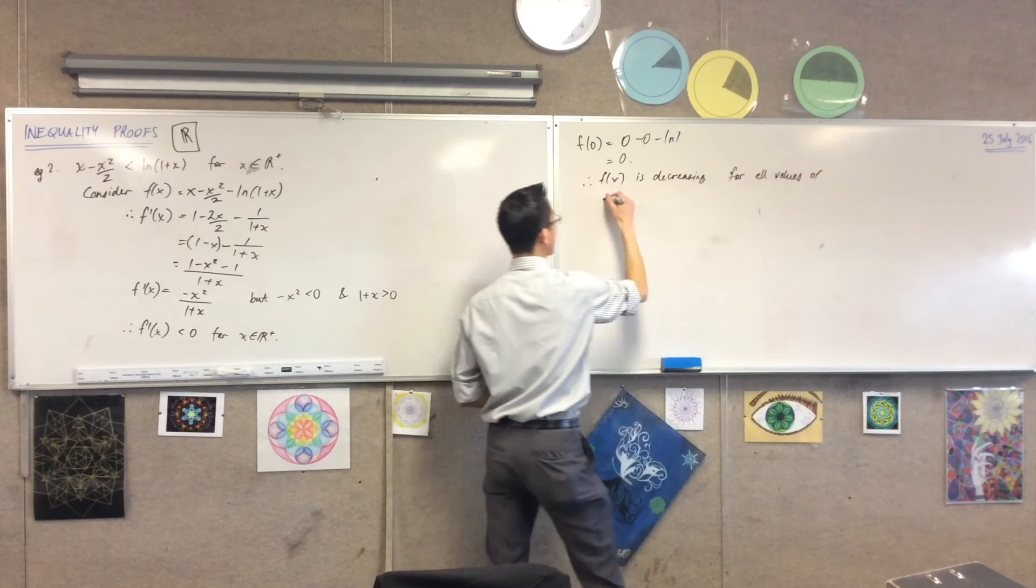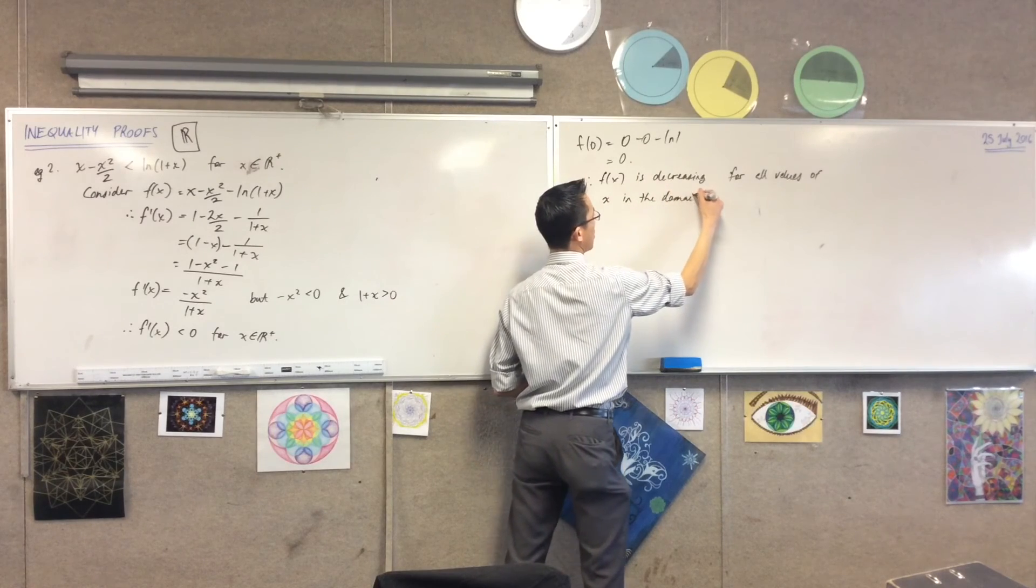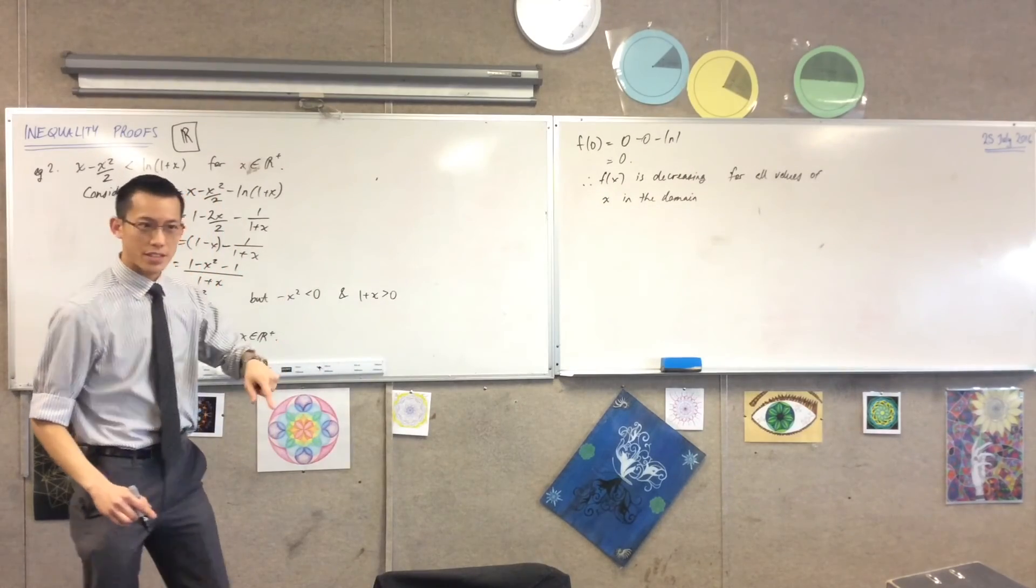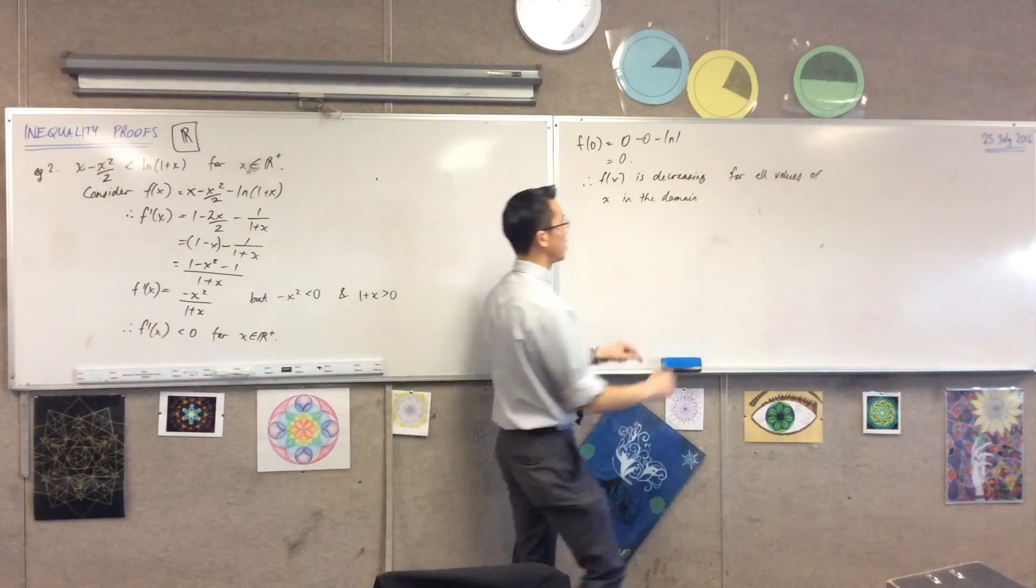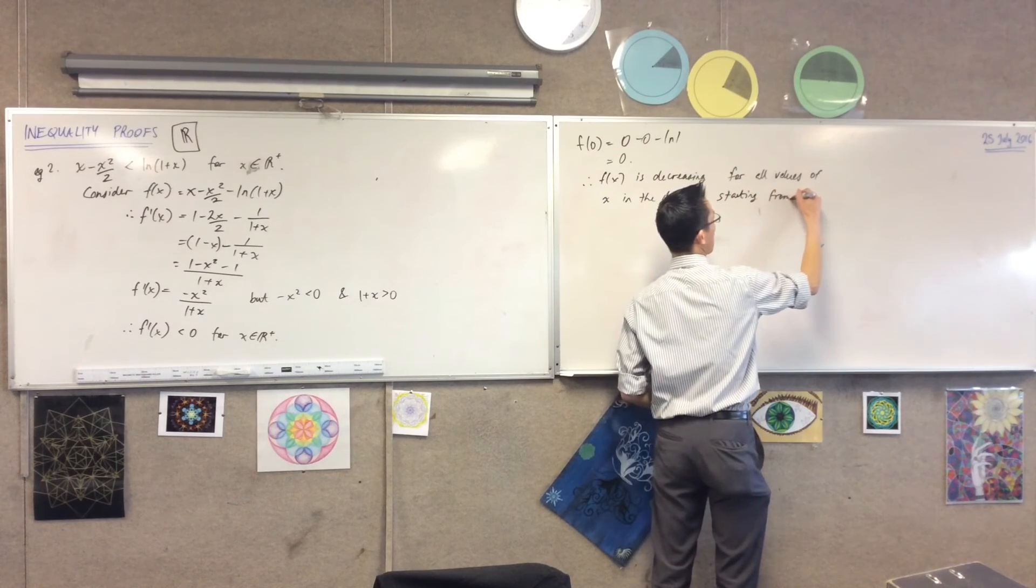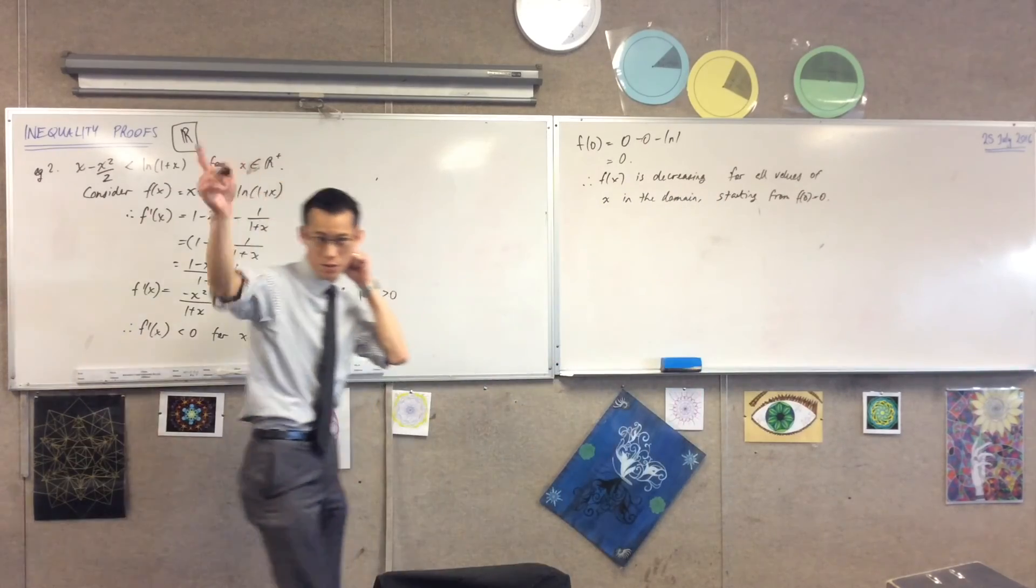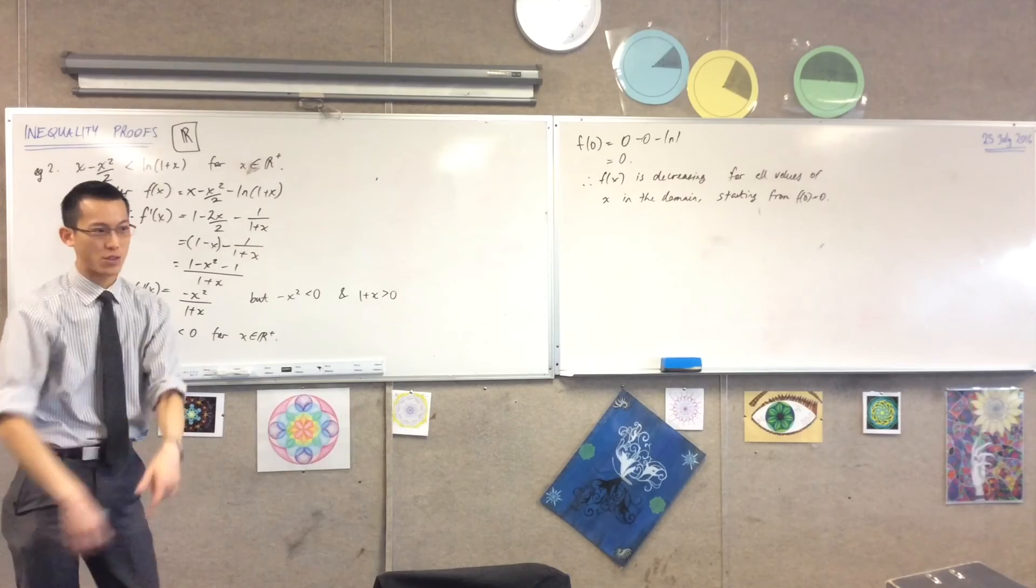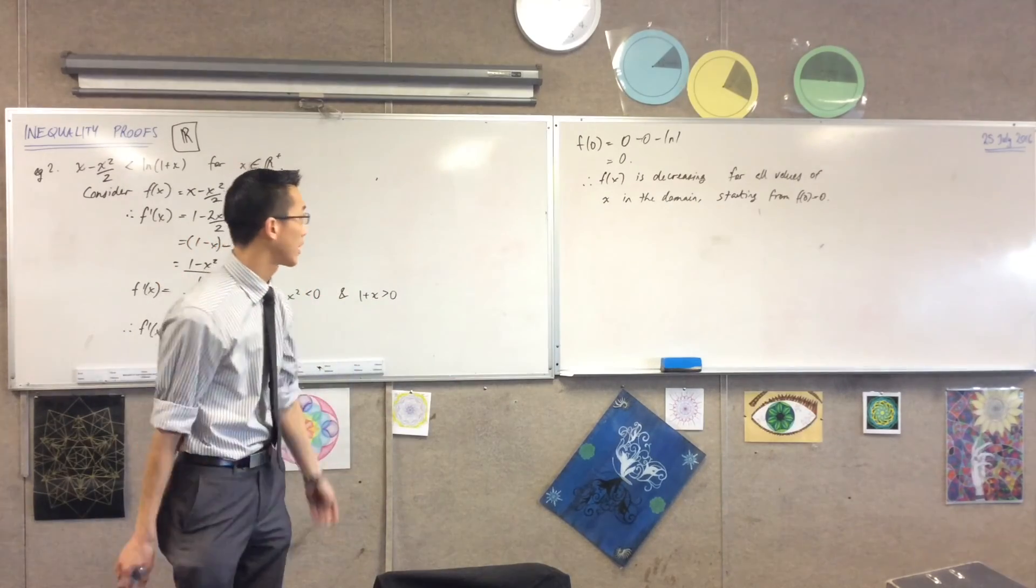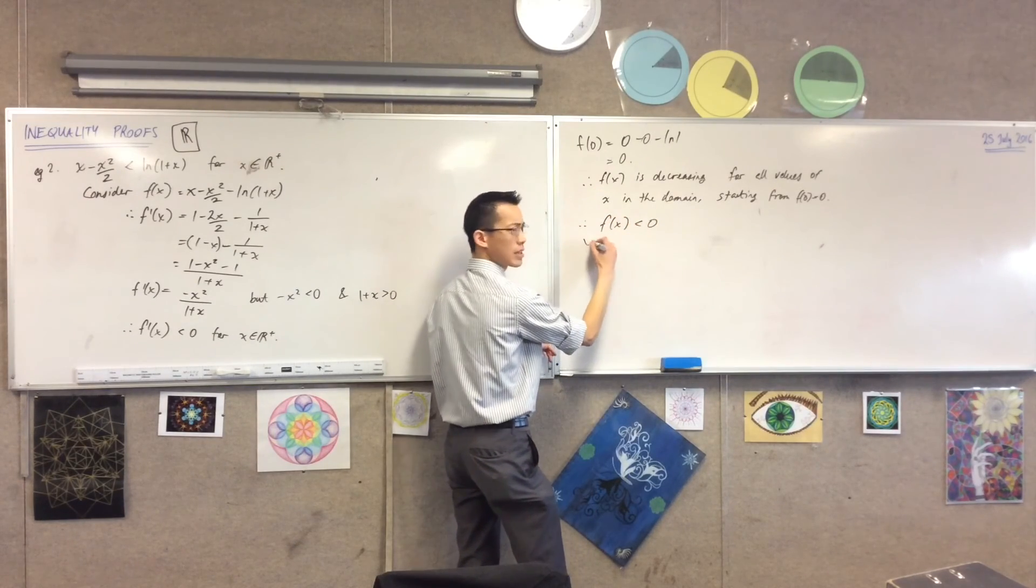For all values of x in the domain. But it's not just decreasing, it's decreasing for all values of x in the domain starting from this value that we just determined. All right? So if you start from zero, you drop down, right? That means you're always going to be negative, because if you just started at one and drop down, there will be some values you're positive. Okay, so therefore f(x) is less than zero.